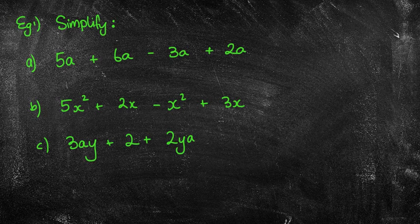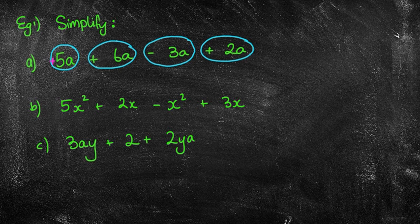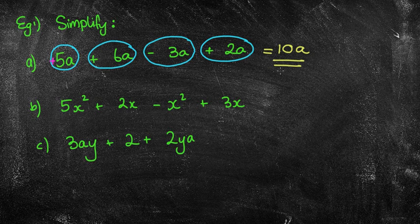The first example is simplifying by adding and subtracting like terms. Like terms are where the letters are the same. Looking at all four terms, they all have an 'a', which makes them all like terms. Make sure the sign in front belongs with each term — there is a plus in front of the 5a even if we don't always say it. So 5 plus 6 is 11, minus 3 is 8, plus 2 equals 10, giving us 10a.